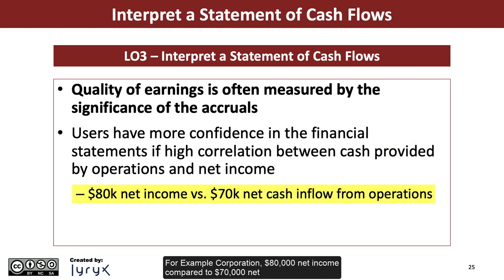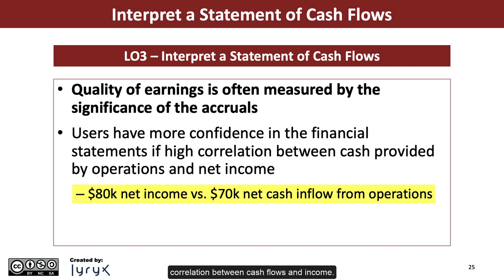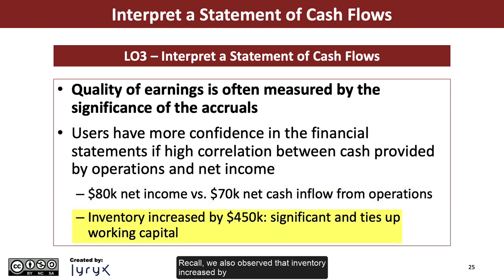For example corporation, $80,000 net income compared to $70,000 net cash inflow from operations is a reasonably strong correlation between cash flows and income. Recall, we also observed that inventory increased by $450,000, which is significant and will tie up working capital.